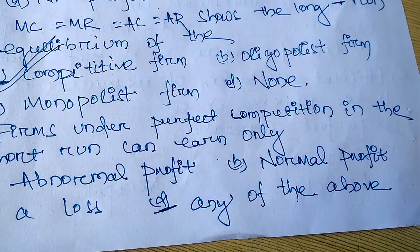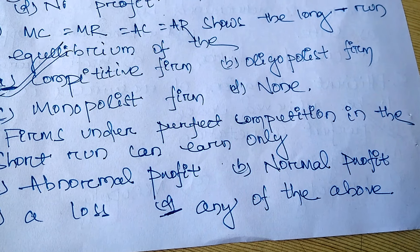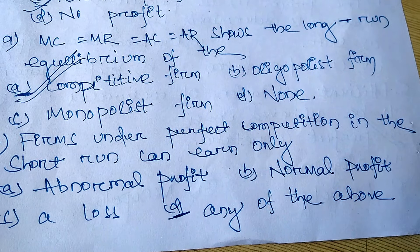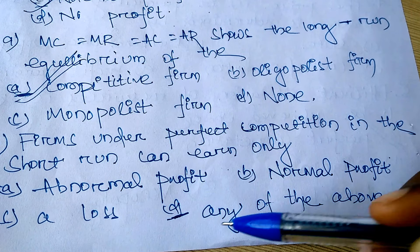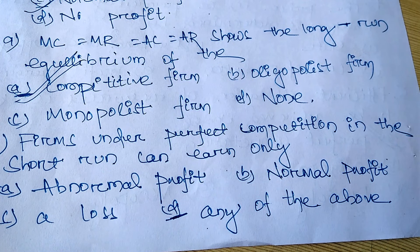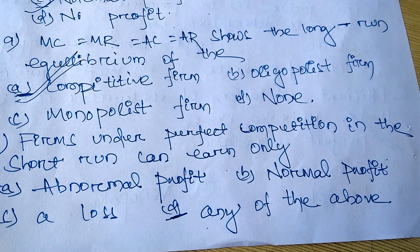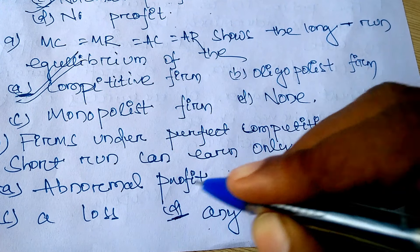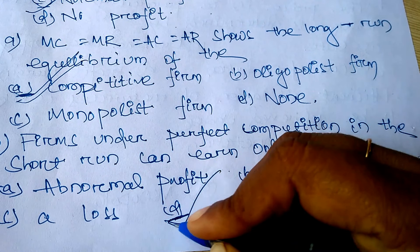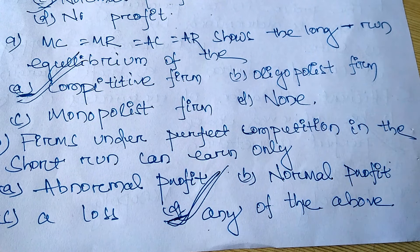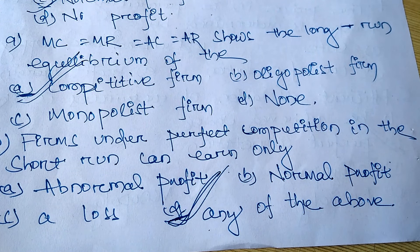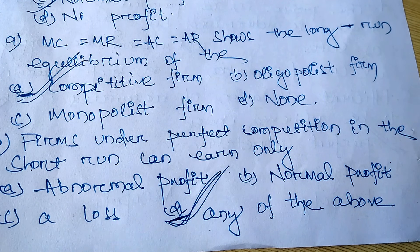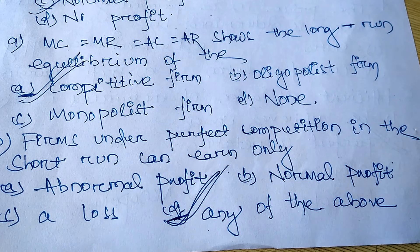Firms under perfect competition in the short run can earn: only abnormal profit, normal profit, loss, or any of the above. You have to know that in the short run, anything can happen — so any of the above is the right option. It may be normal profit, abnormal profit, or loss. Thanks.